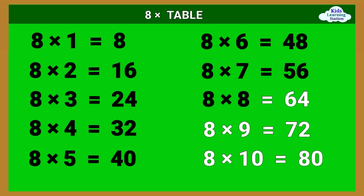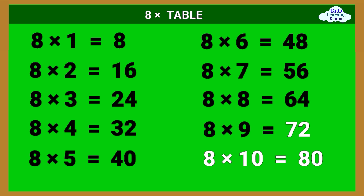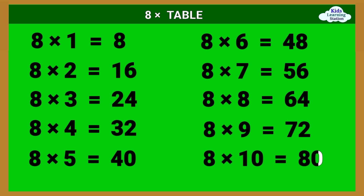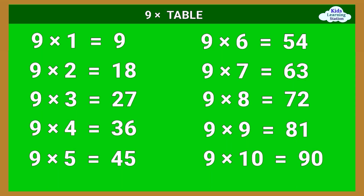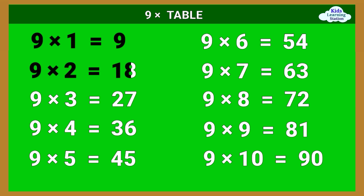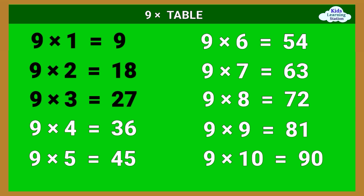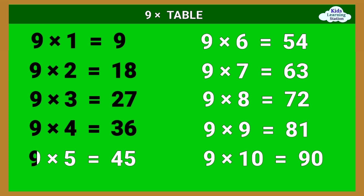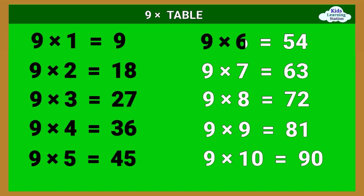8 times 8 equals 64, 8 times 9 equals 72, 8 times 10 equals 80. 9 times table: 9 times 1 equals 9, 9 times 2 equals 18, 9 times 3 equals 27, 9 times 4 equals 36, 9 times 5 equals 45, 9 times 6 equals 54.